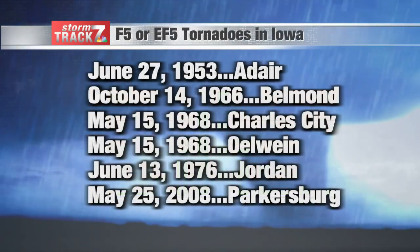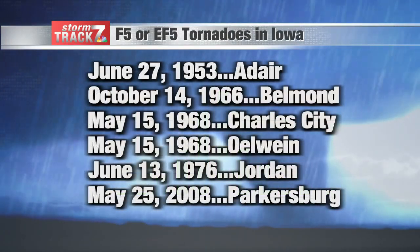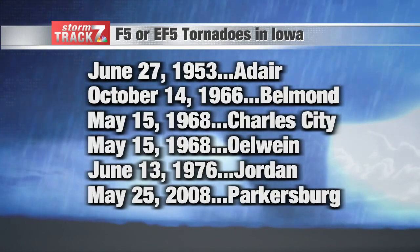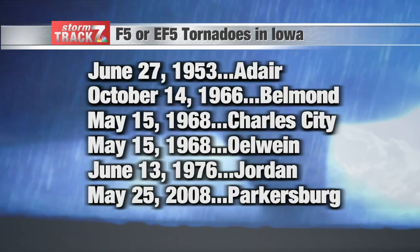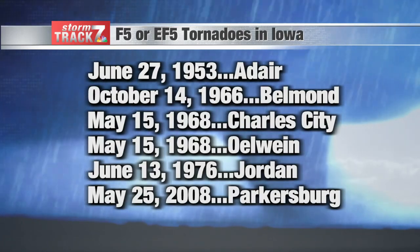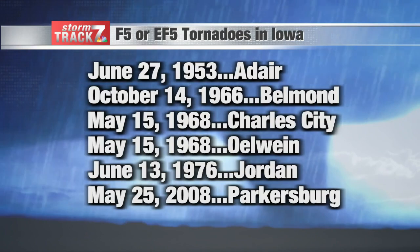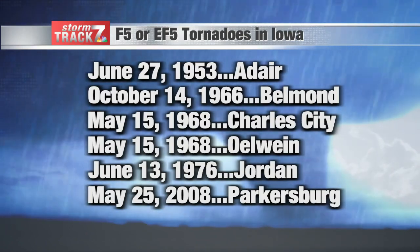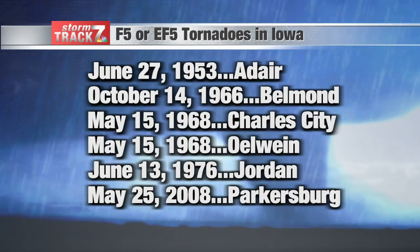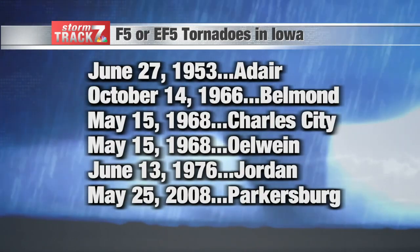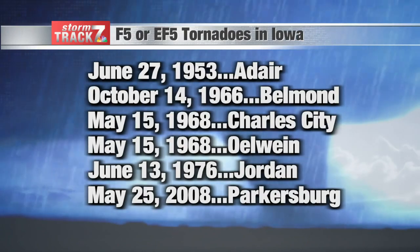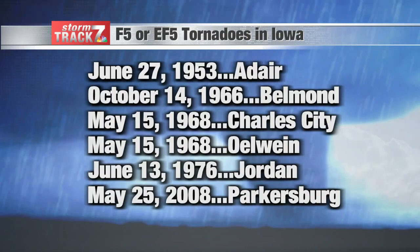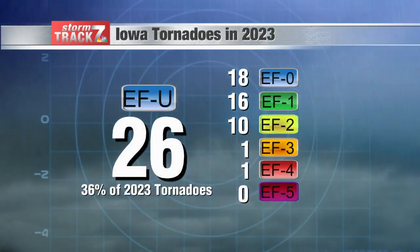Looking at a bit more history, we've got to look at our F5s and EF5s. The latest EF5 was May 25th, 2008 — the Parkersburg EF5, which many folks remember. Going back to 1953, Adair on June 27th had an F5 tornado. Even a pair of them on May 15th, 1968, from two separate storms — one F5 in Charles City and another that went through Oelwein. So we do have a history of violent, catastrophic tornadoes that have gone through portions of the state of Iowa.